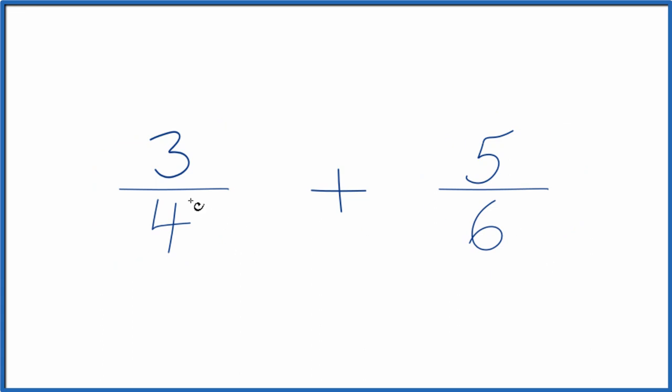We need to find a common denominator, something that both 4 and 6 go into evenly. So if we can get the denominator to be the same, then we can just add the numerators and we'll have found the sum for 3/4 plus 5/6.